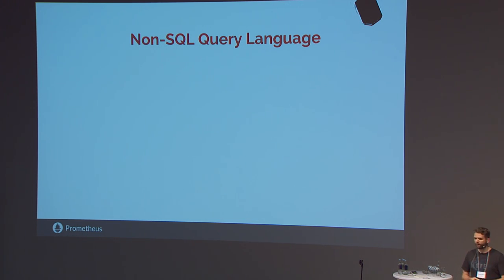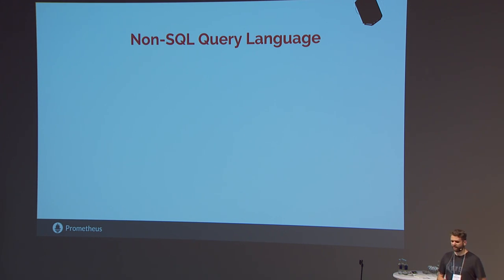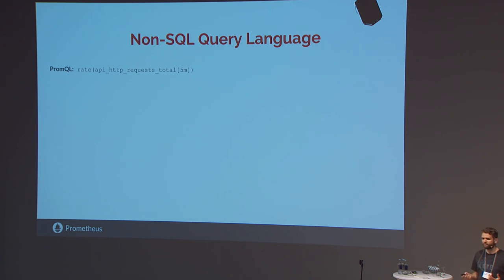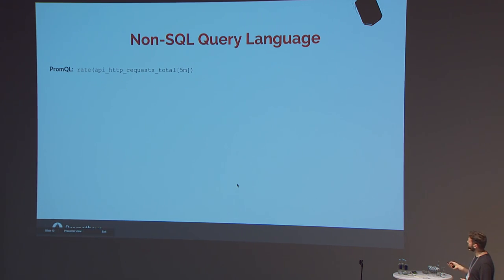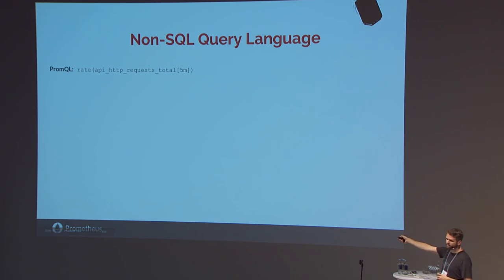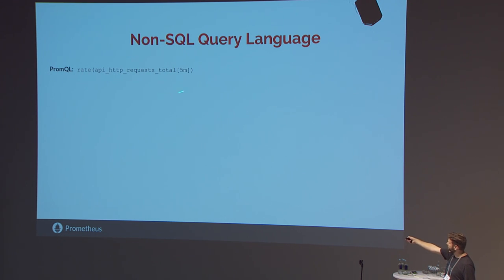We have a non-SQL query language, which trips some people up. With time series databases, people often think SQL is the language data analysts already know, so let's build a dialect based on that. With PromQL we went for a completely custom language. For example, a query for the total number of HTTP requests — this selector potentially selects hundreds of thousands of time series — you take the rate as averaged over five minutes, and it automatically propagates the same labels from the input set to the output set, like a map in a functional language.